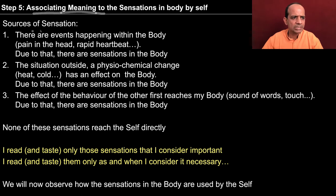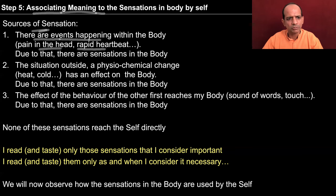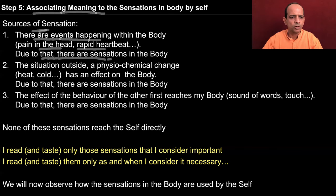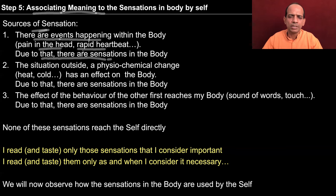If you look at the sources of sensation, there are 3 sources. The first is events happening within the body — like there is pain in the head or a heartbeat that may be rapid or slow at times — and due to that there are sensations in the body. If you observe, you can see that there are sensations in every part of the body, in every cell. We are not aware because we are not paying attention, but if you pay attention, you can make out that yes, there is sensation in every part of the body.